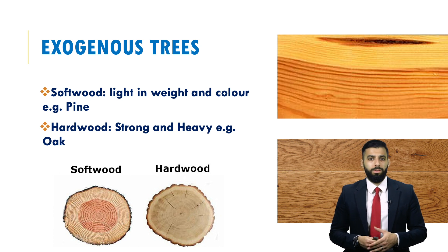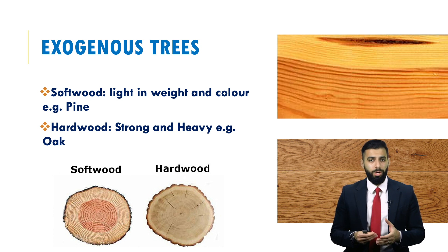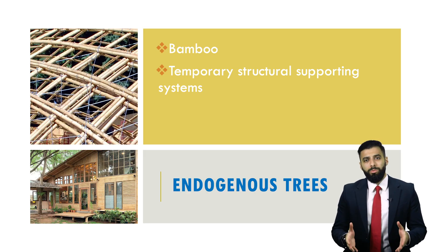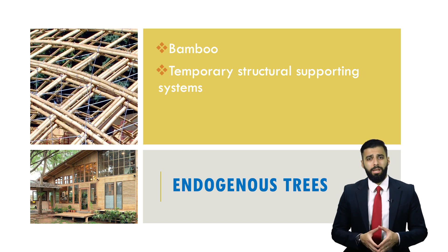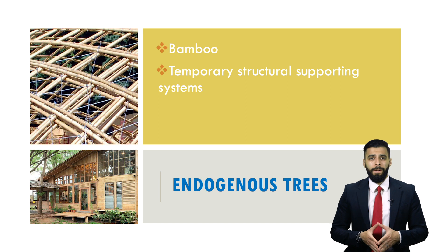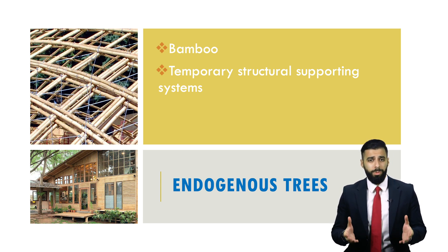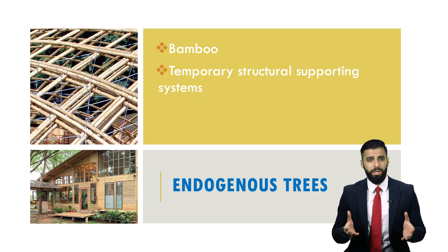Hardwood is strong and heavy. In terms of endogenous trees, an example would be bamboo. It is used commonly in construction, for instance as a structural supporting system, and in some cases bamboo is used to build sustainable houses.